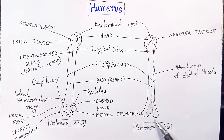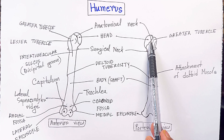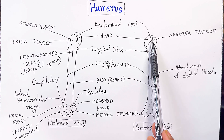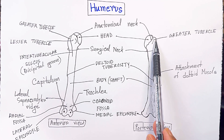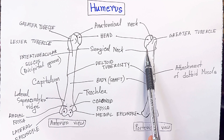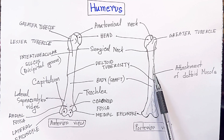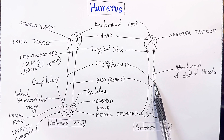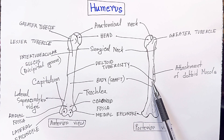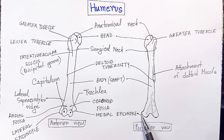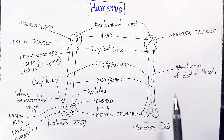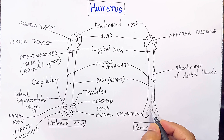Then this is the posterior view of the humerus. This is the head, neck, greater tubercle, then surgical neck. This is the attachment of the deltoid muscle, then the deltoid tuberosity, body or shaft of the humerus, medial epicondyle, lateral epicondyle, and this is the olecranon fossa.